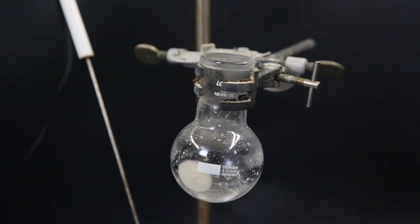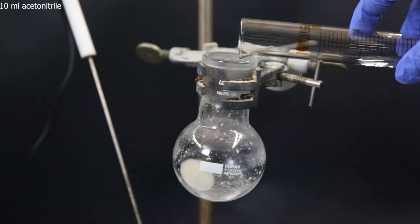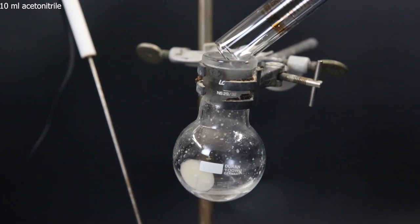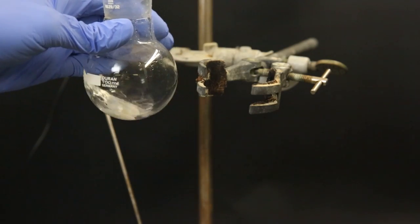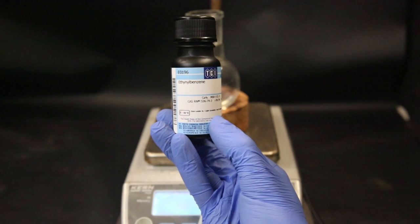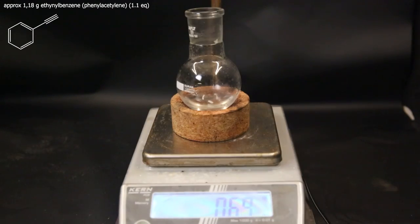Now that I have the tosyl azide, I can start with the click chemistry. So to the flask with the azide, I add 10ml of acetonitrile. I shake it around and the solid dissolves easily. Now I set the flask on a scale and dropwise add around 1.18 grams of ethinyl benzene.